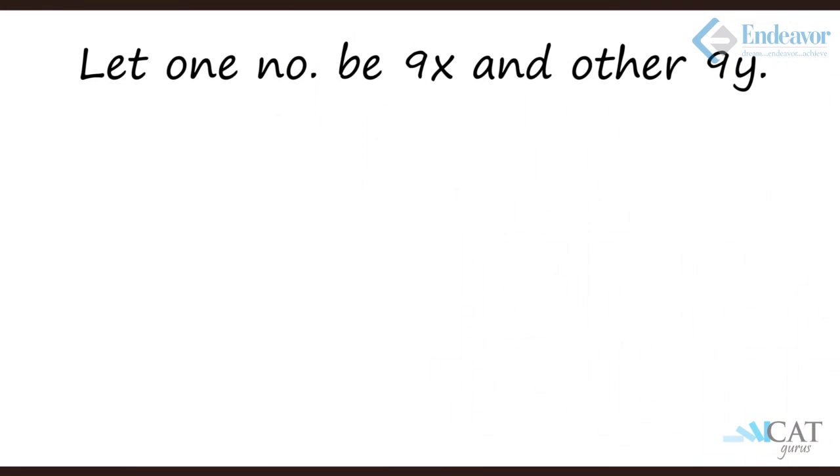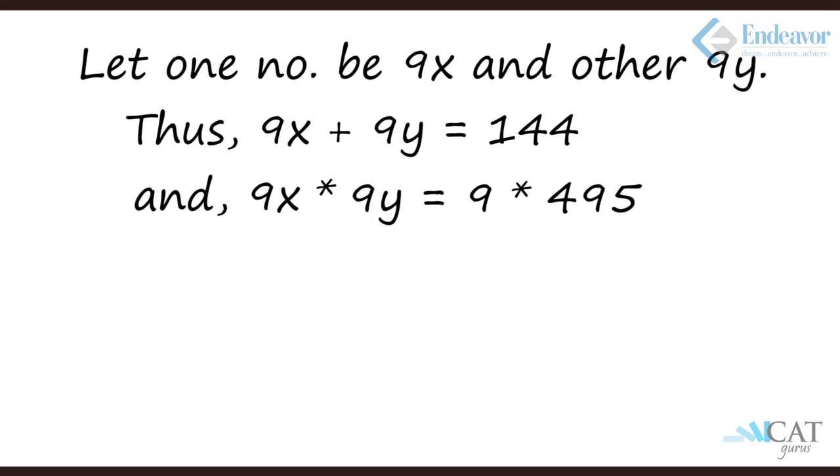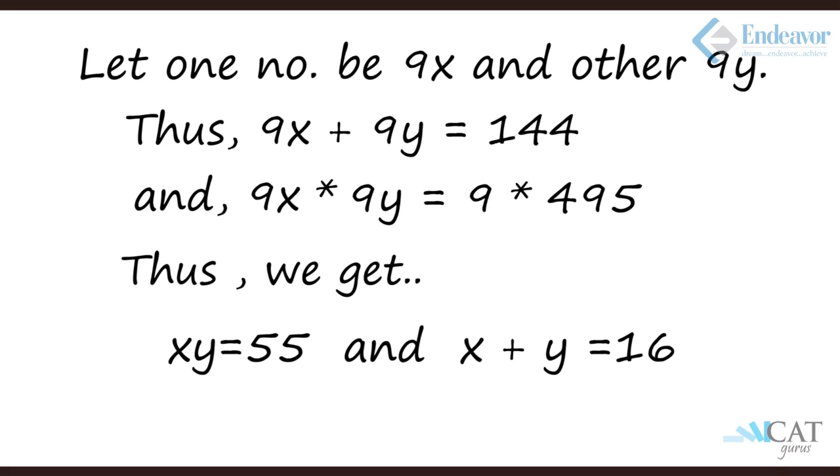So the sum of the two numbers which is 9x plus 9y is 144. And 9x into 9y is 9 into 495. So we have two equations: xy equals 55 now and x plus y is nothing but 16. We can go ahead and solve this question by using the quadratic equations. But let's try something else.